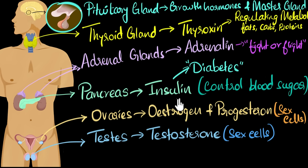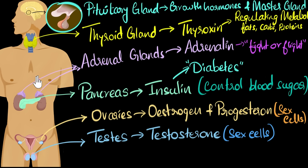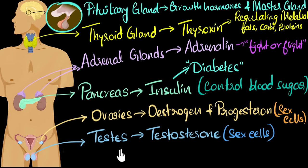That's pretty much it. We'll talk more about the hormonal feedback system and iodine deficiency in a future video. To summarize: endocrine glands are glands which do not have a duct — they directly secrete hormones into the bloodstream. These are some of the major endocrine glands and the major hormones they produce.